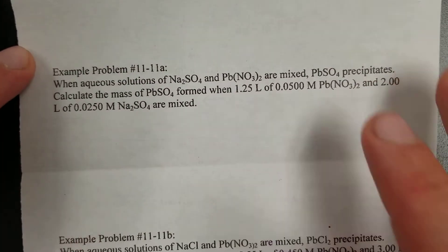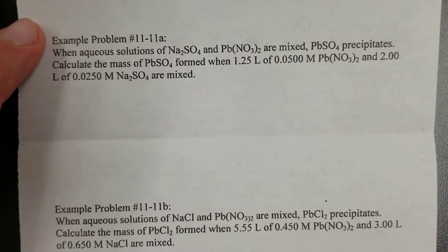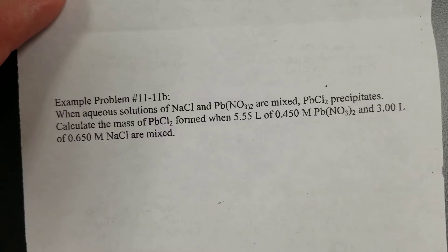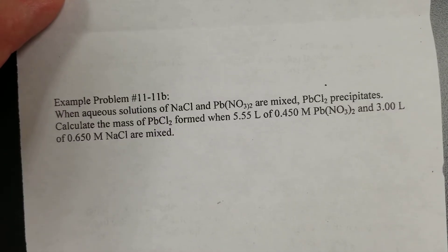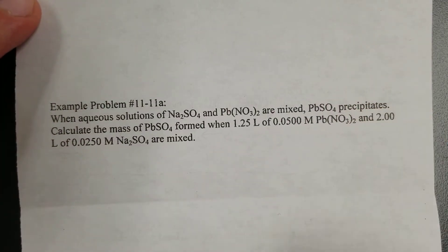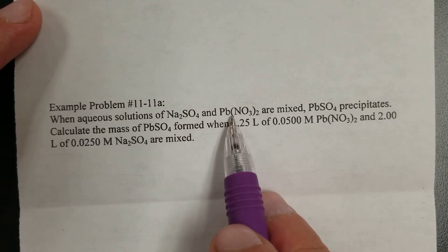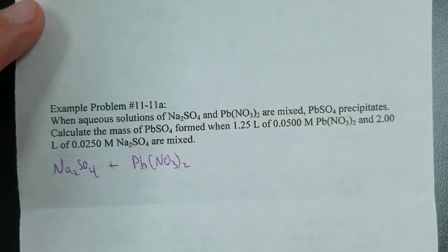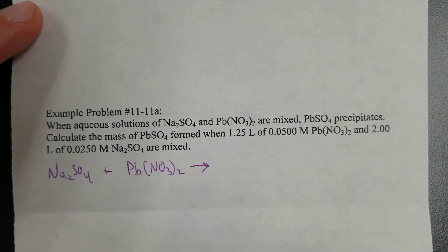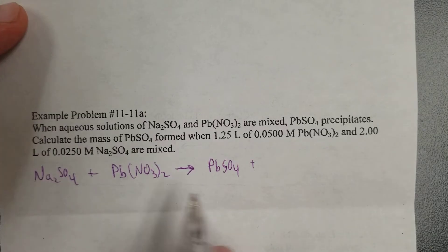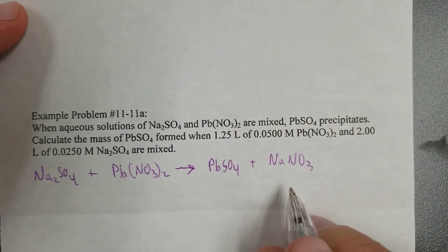Let's do the last one, example problem 11-11. For this one, we again need the balanced equation. Sodium sulfate and lead nitrate are mixed, producing PbSO₄ as a precipitate. By conservation of mass, the sodium and nitrate must have paired up — that's the correct formula for sodium nitrate. Balance it: two sodiums, put a 2 there; two nitrates, got a 2 there; one lead, one lead; one sulfate, one sulfate.